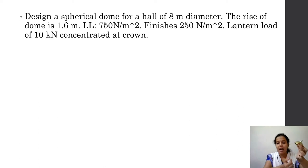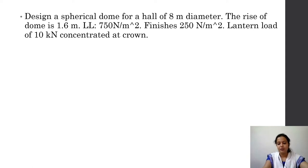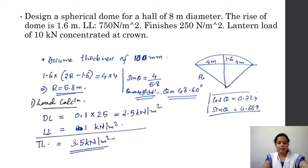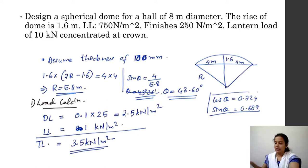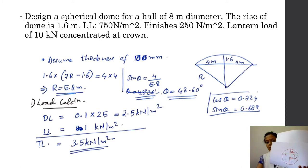We assume a thickness of 100 mm for this dome. This is the typical range we assume, and 100 mm is also convenient for calculations. Now, there is a property of a circle that we will use.